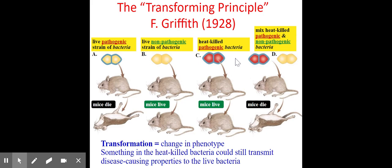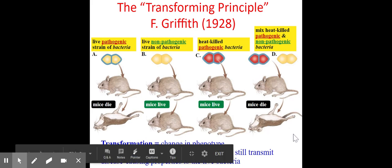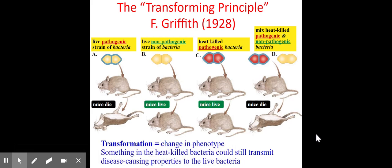The key finding was when they mixed heat-killed pathogenic bacteria with non-pathogenic bacteria. Suddenly the non-pathogenic bacteria took on pathogenic qualities and caused the mice to die. This demonstrated that there was such a thing as a transforming principle — you could take traits from one organism and transplant them into another. They just didn't know how.